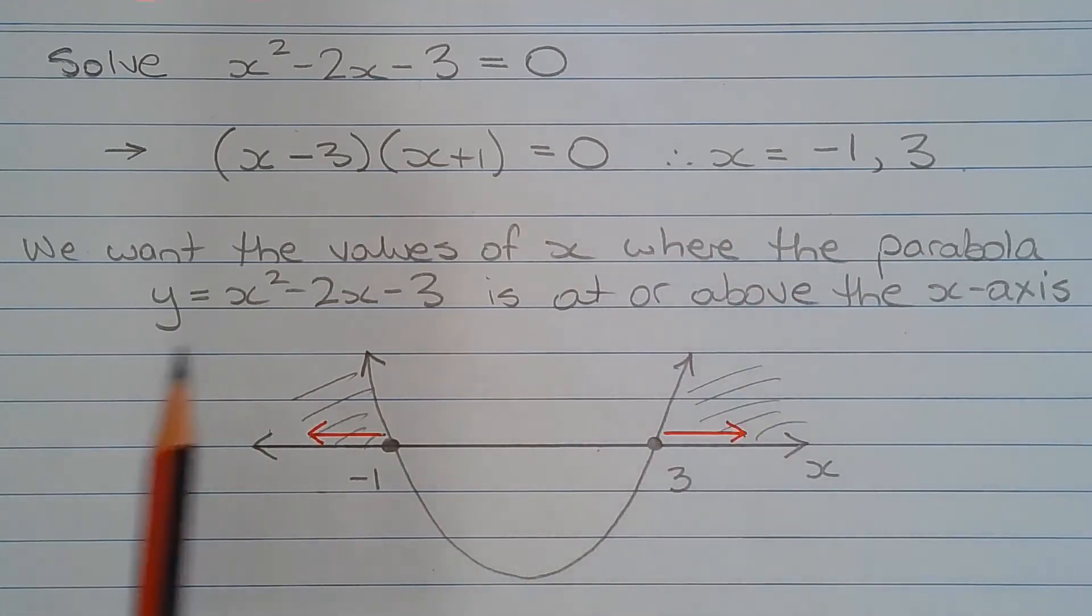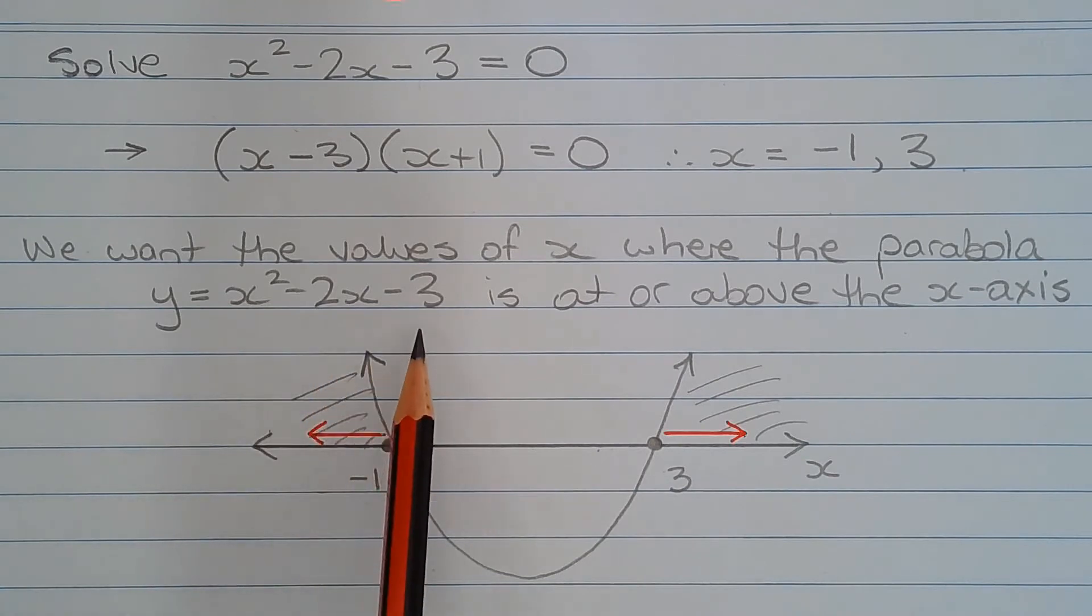Now we want the values of x where the parabola y equals x squared minus 2x minus 3 is at or above the x-axis.